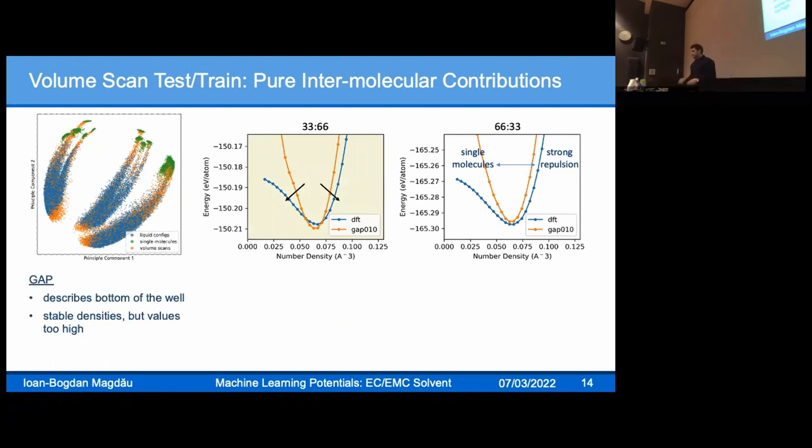This is what we see on the energy-volume binding curves. I compare for two different compositions, for configurations taken from dynamics, the DFT ground truth energy curve versus the predicted GAP energy curve. This is a GAP trained pretty well through iterative training. You can immediately see it describes quite well the bottom of the well where most thermal configs live, but it doesn't describe well the repulsive regime here and the attractive regime there. This means you obtain stable densities, but the values are too high because you're not describing the tails of the distribution.